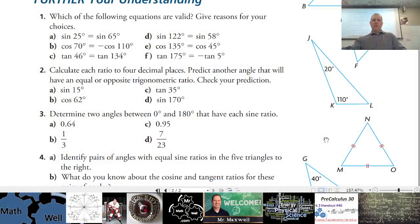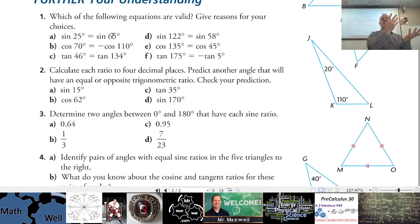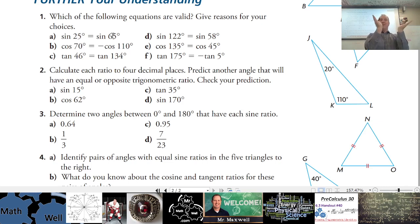Foundation of Math 24.1, number one. The word 'valid' means are they true or reasonable — give reasons for your choices. For letter a, sine of 25 and sine of 65 — would those be the same? You could check on your calculator, but you should know these are different. They're both first quadrant angles, and no two angles in the first quadrant have the same sine ratio — they're all different.